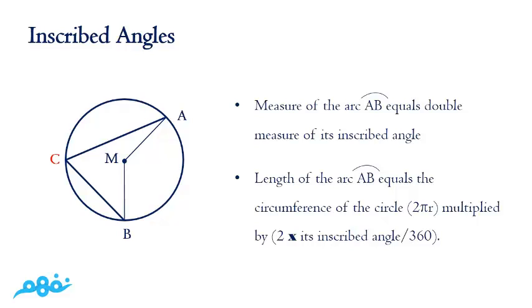What about the inscribed angle? The inscribed angle has a measurement which equals half the central angle and half the measurement of the arc. So the measure of the arc equals double its inscribed angle.